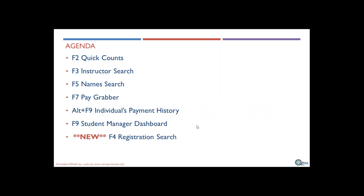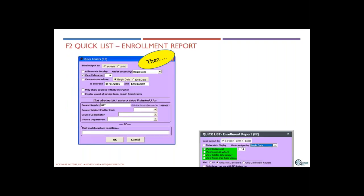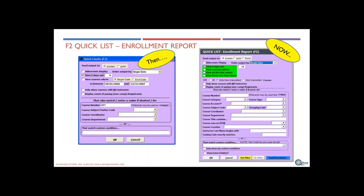So what are we going to talk about? I call it the Fab Five plus one — function keys that allow you to get data about your program. F2 is course data, F3 is instructor, F5 is names, F7 is pay, Alt F9 is a way to drill into a student's payment history, F9 is the dashboard, and the new one is F4.